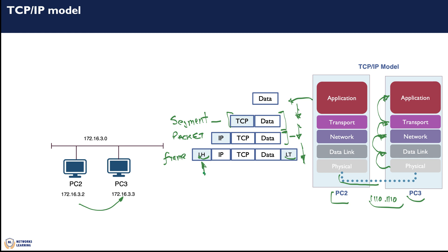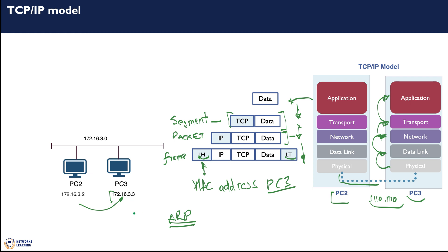PC2 needs to add the MAC address of PC3 in the link header. At this point, when PC2 is sending a packet to PC3, it does not have any knowledge of what the MAC address of PC3 is. This is where the Address Resolution Protocol, ARP, comes into play. PC2 sends a broadcast request asking for the MAC address of 172.16.3.3. PC3 responds with a unicast back to PC2 with its own MAC address. So at this point, PC2 knows the MAC address of PC3, and that is what's inserted in the link header.